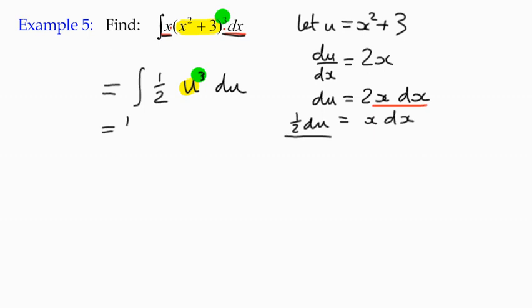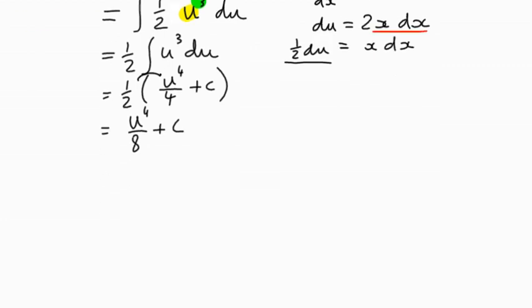We can take out the half, and then u³ with respect to u is u⁴ divided by 4 plus c. That means if we multiply the half times u⁴ over 4, it becomes u⁴ over 8 plus c. Not quite finished - we have to substitute it back. We can't leave it in terms of u.